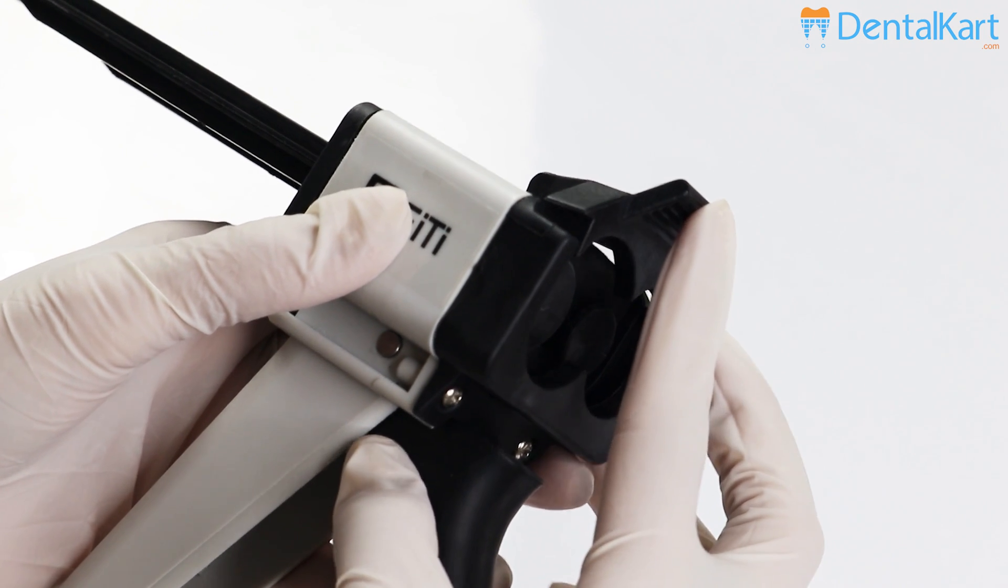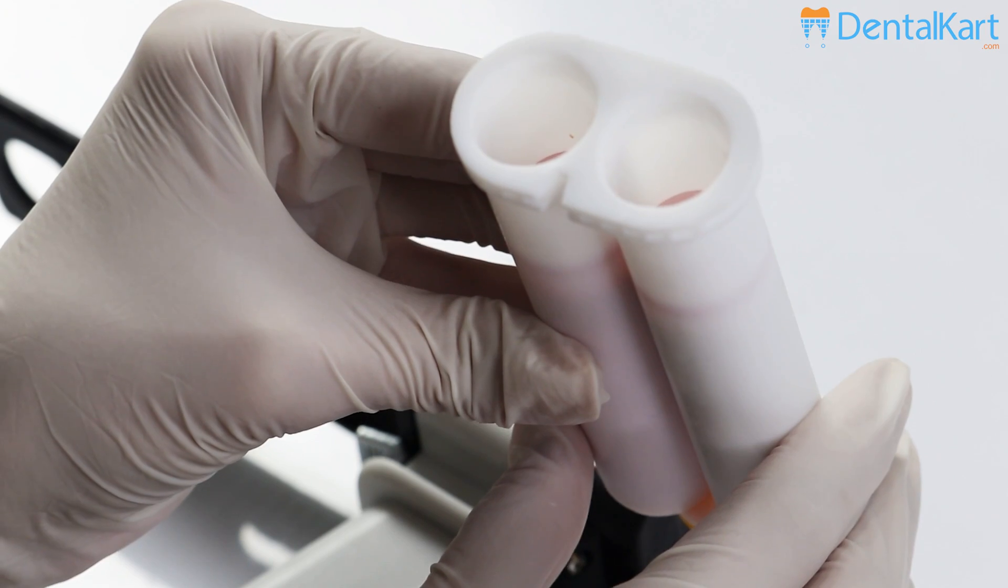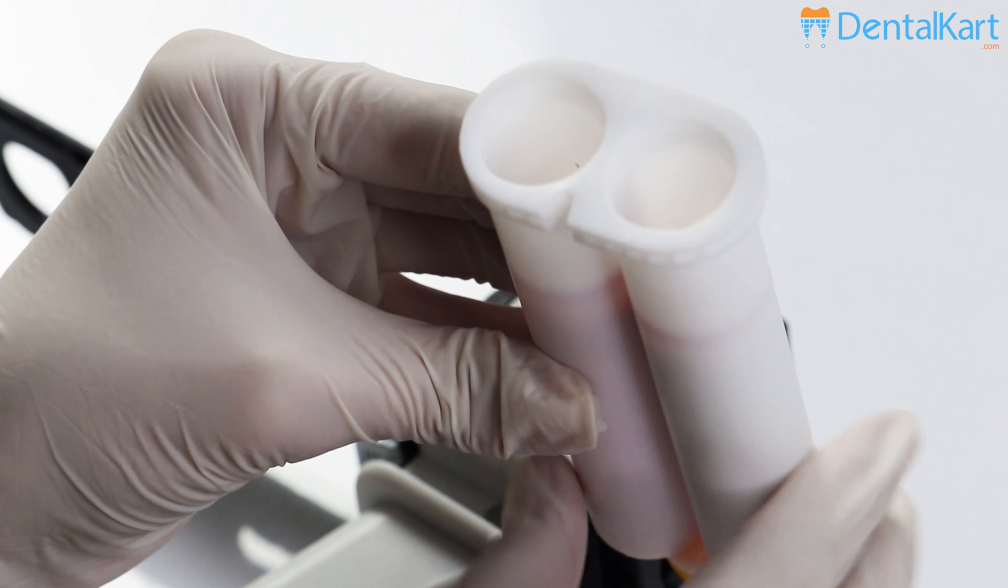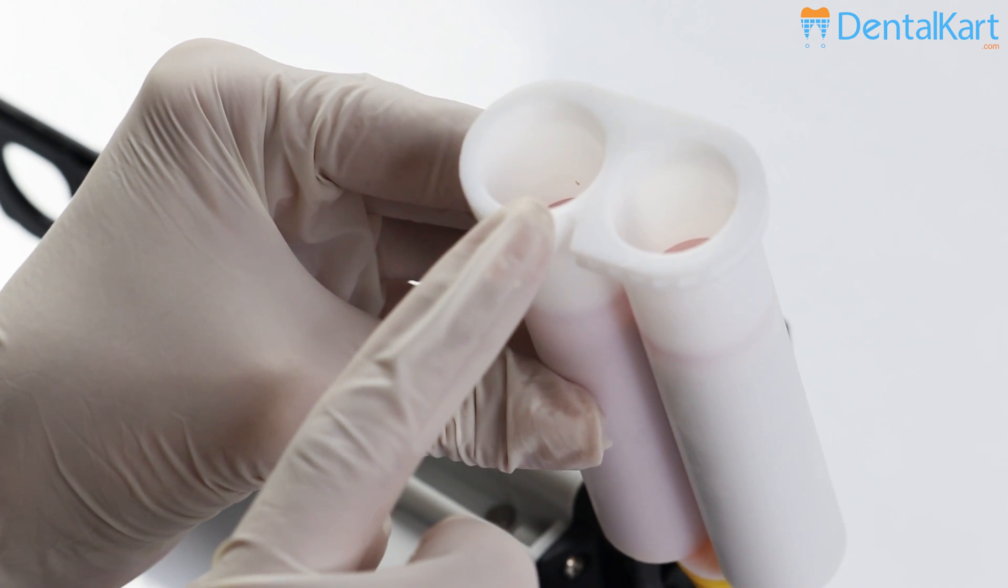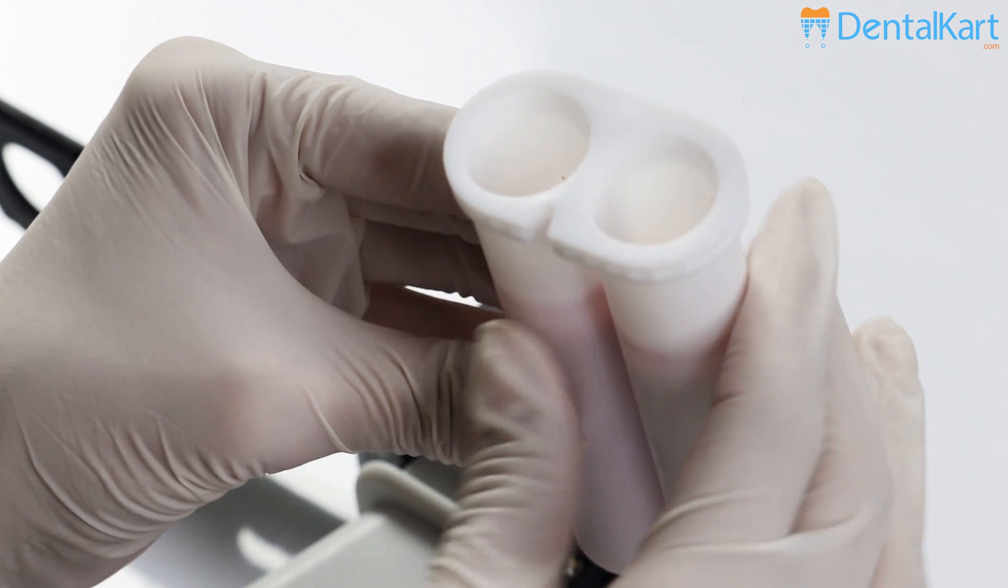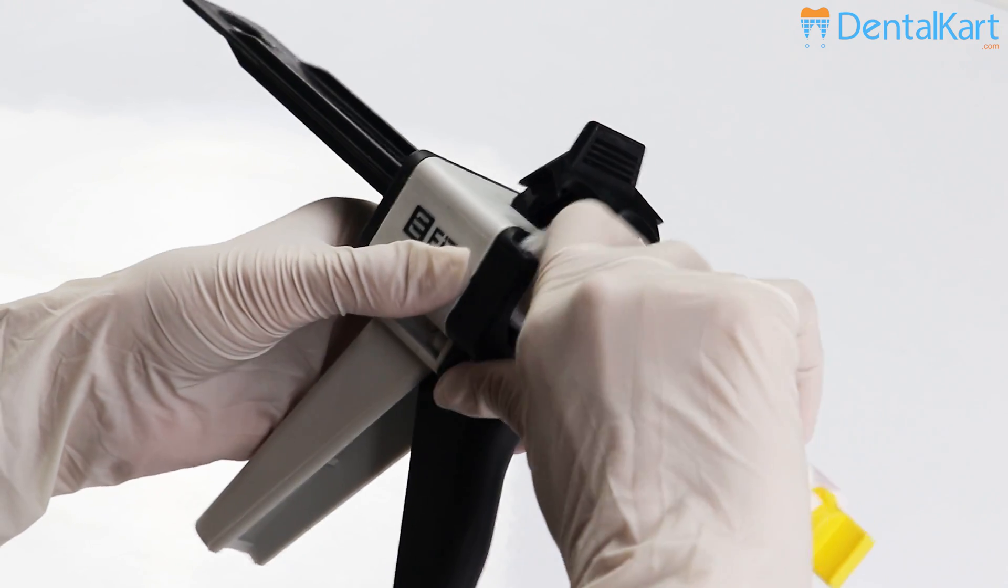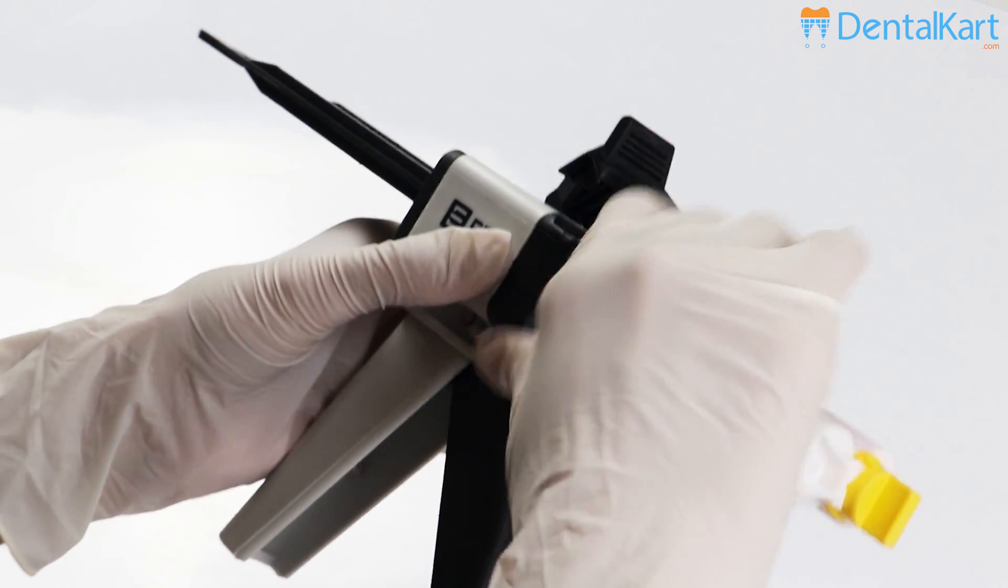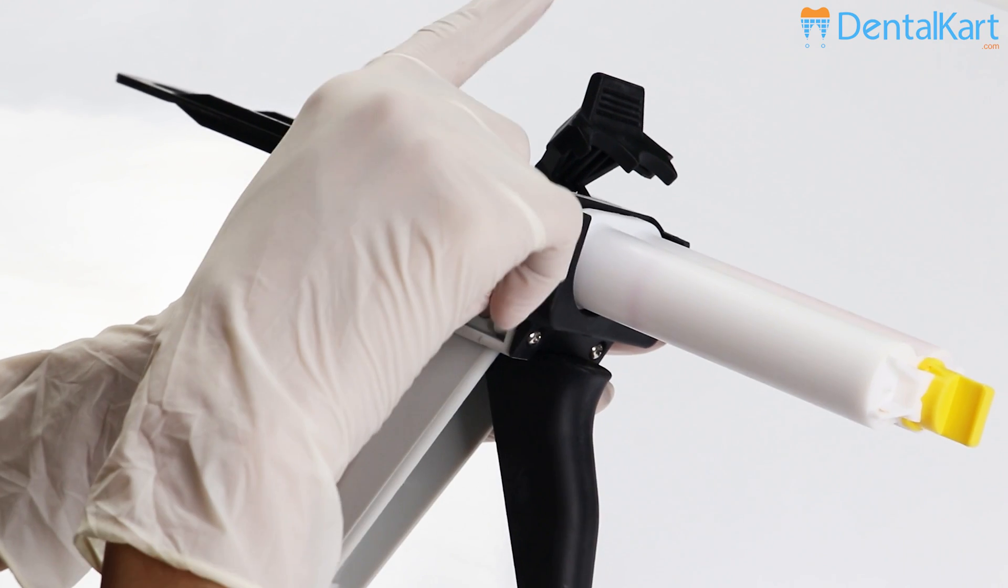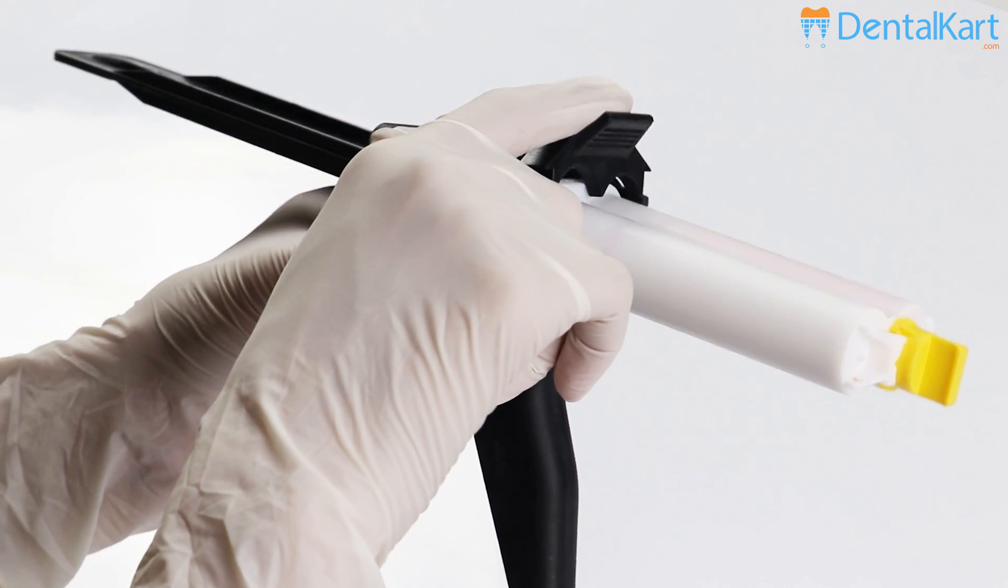Lift the cartridge holder of the dispenser and load the cartridge, ensuring that the V-shaped notch on the flange of the cartridge is facing down. Push down the cartridge holder to fix the cartridge.